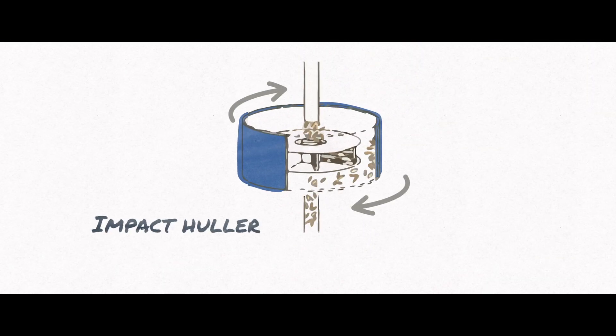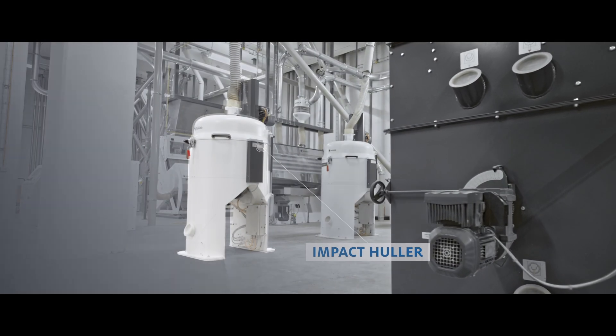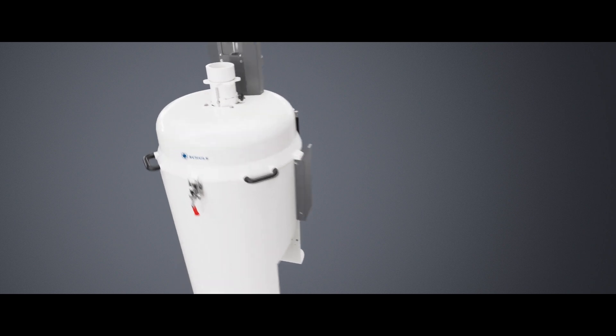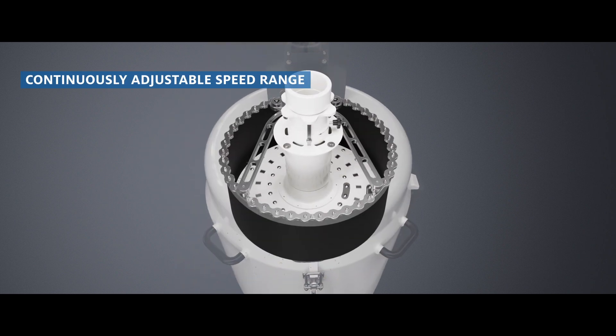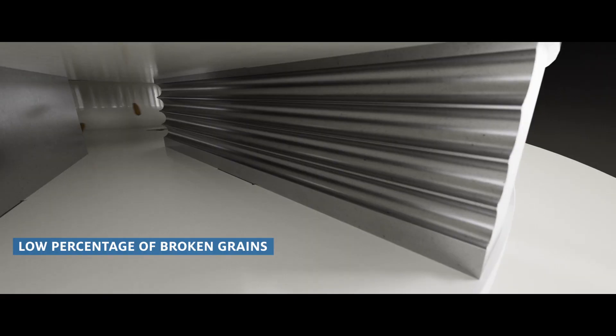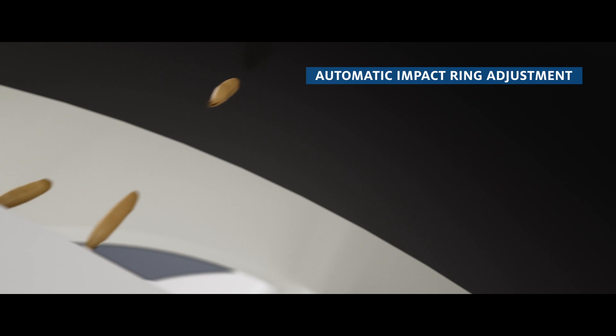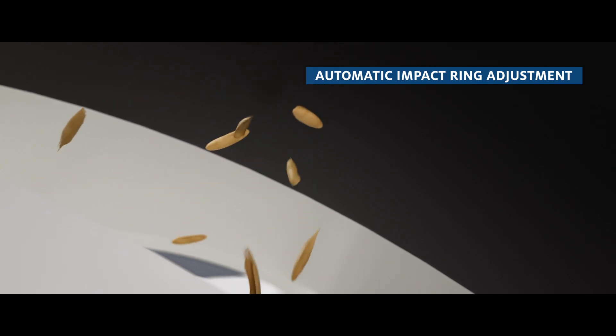After classification, a decisive process step follows in the oat processing plant. In the impact huller, a centrifugal wheel rotates at up to 2200 revolutions per minute, aligns each individual grain with the help of centrifugal forces, and throws it specifically outwards against a specially arranged impact ring. The oats are separated from the husks.